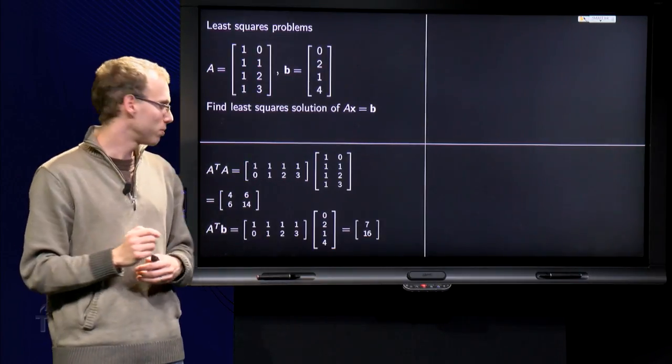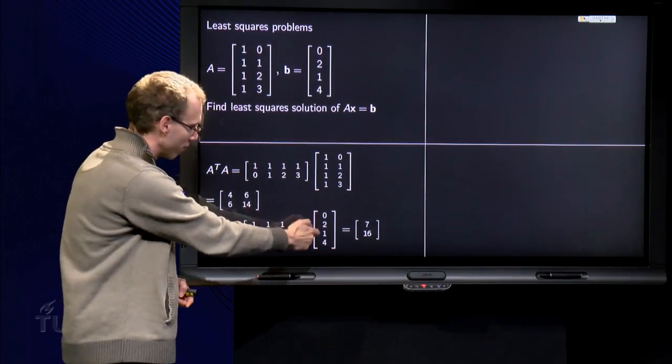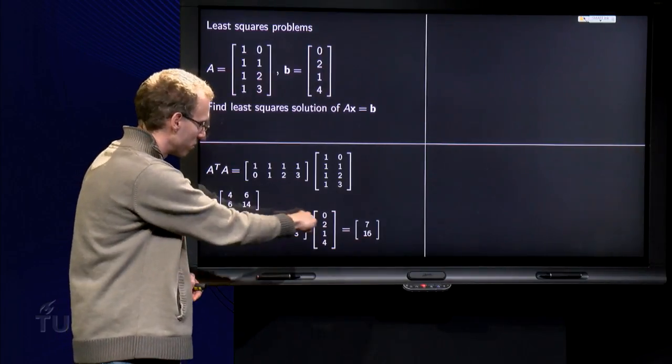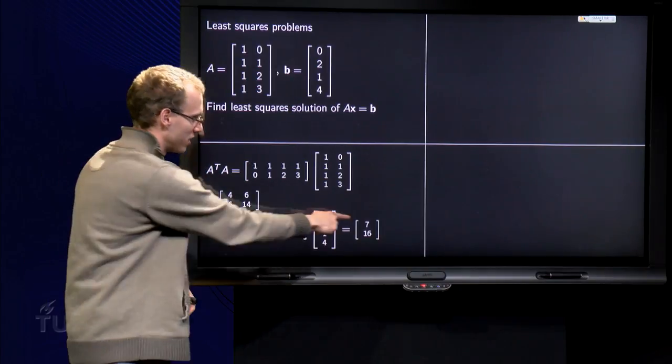A transpose times b: again we have here A transpose and our vector b. So what do we get? 1 times 0 plus 1 times 2 plus 1 times 1 plus 1 times 4, which is 2 plus 1 plus 4 equals 7.